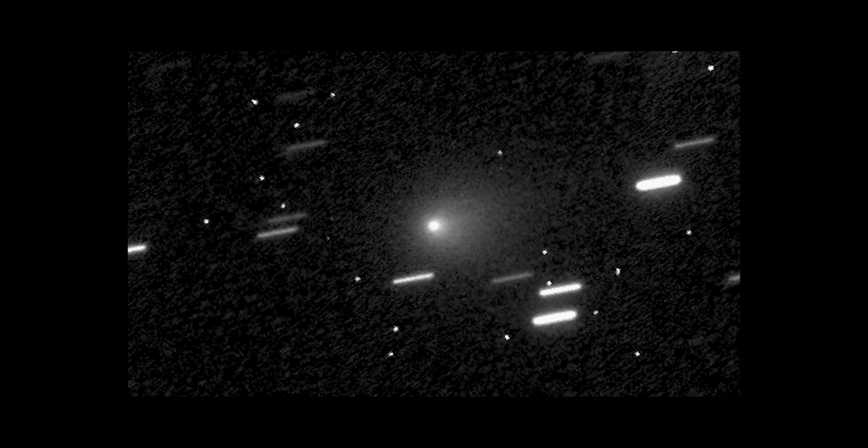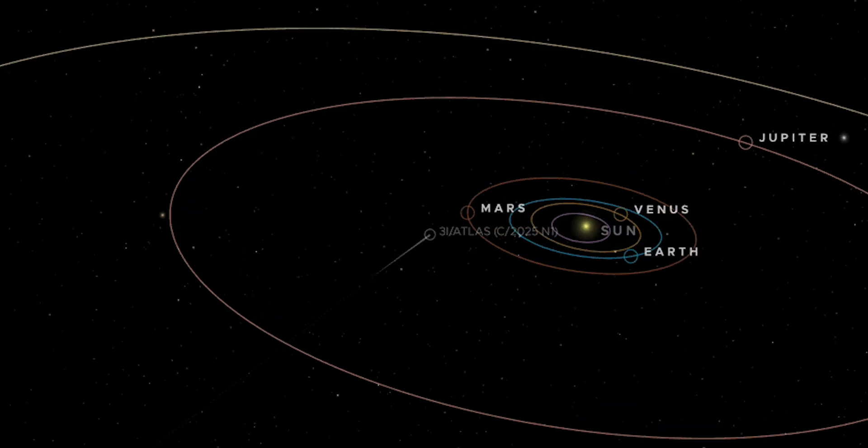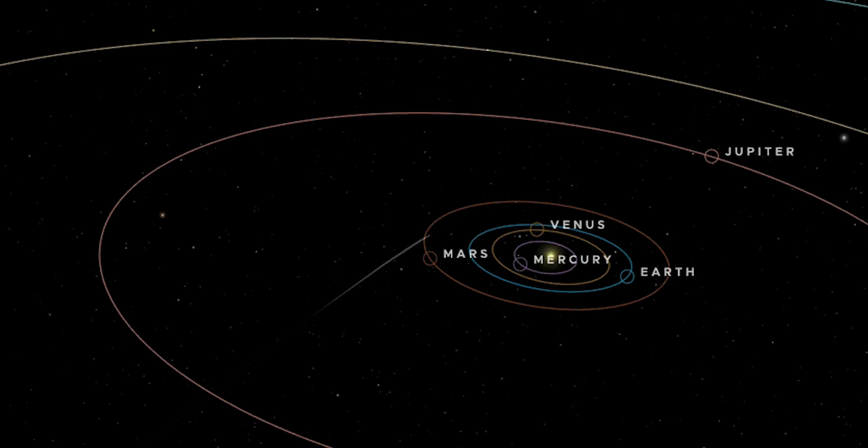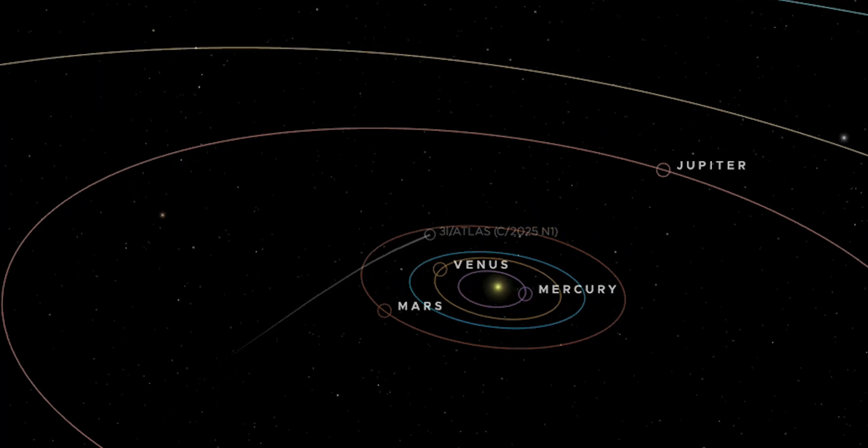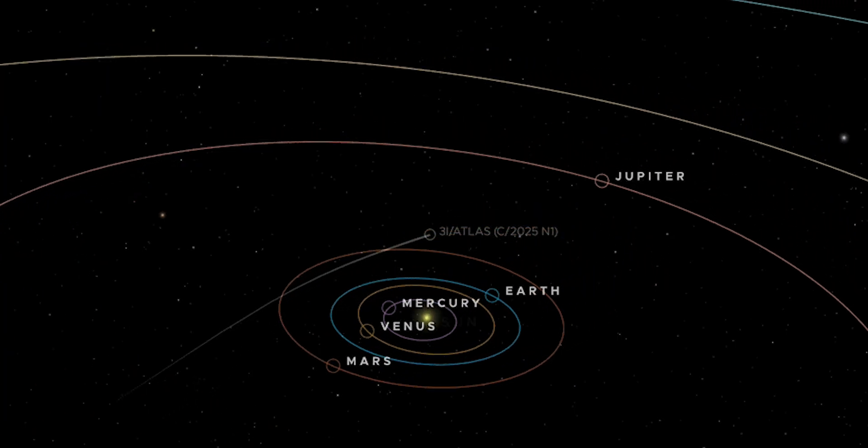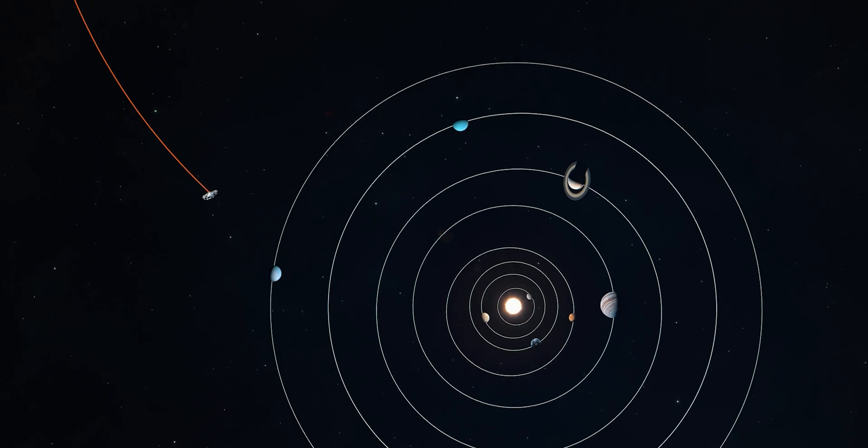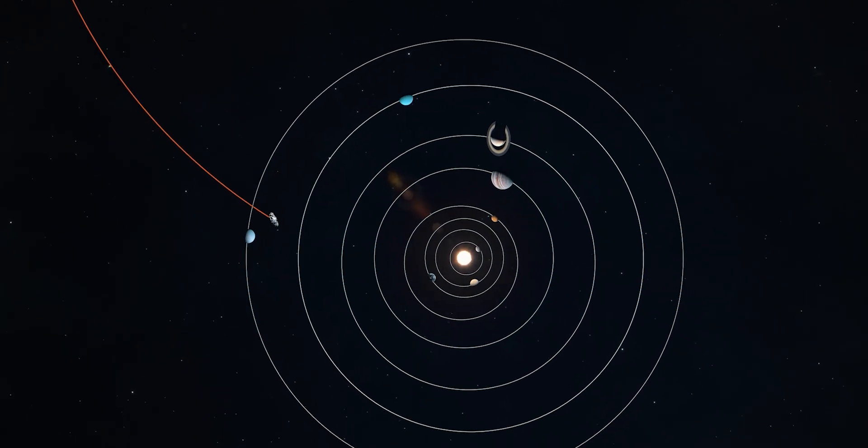At first, it looked like just another distant comet, but its path refused to close. Its speed, at nearly 58 kilometers per second, was too high for anything bound to our Sun. For the third time in history, an object from another star had entered our solar system.